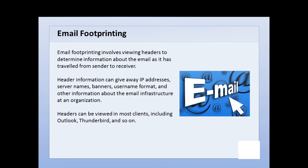This header information can tell you actually a lot of information about the organization. It can tell you IP addresses, server names, banners that can help you determine what operating system or email application is running on the email server. You can also get username format for the internal network in some cases — and you can even get usernames, because frequently someone's email address is their username, helping you determine what kind of username structure they have on their internal network.